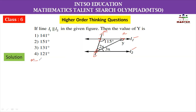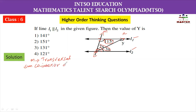We consider line M as the transversal. If we find the value using 150 degrees, and 2X and 3X in the total angle, we will say these are co-interior angles. The sum of co-interior angles is 180 degrees.